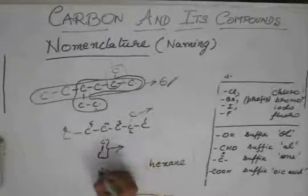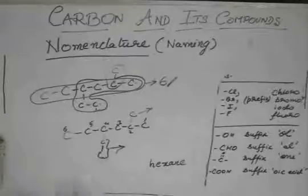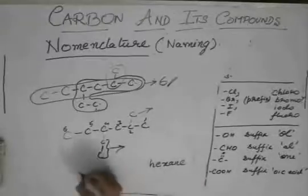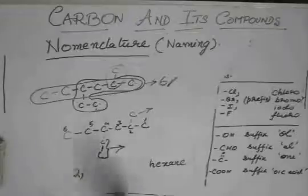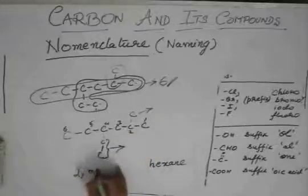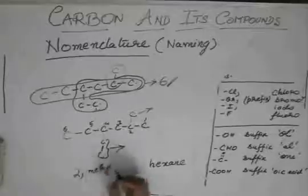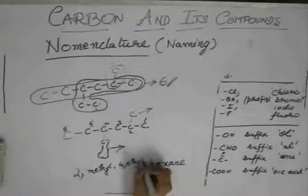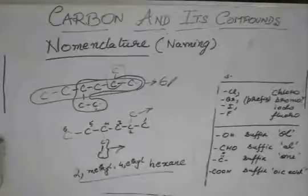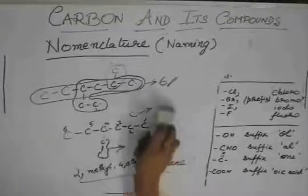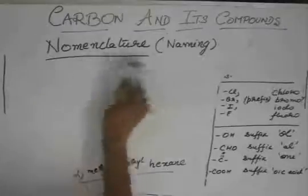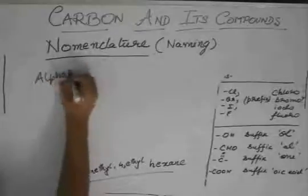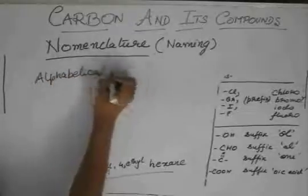So, we have, see, if you have different groups, you don't write two, four, something like that. So, you write two, then the group, which is methyl, and then four ethyl. Still, this is wrong. And with this, we come to another rule called the alphabetical order.